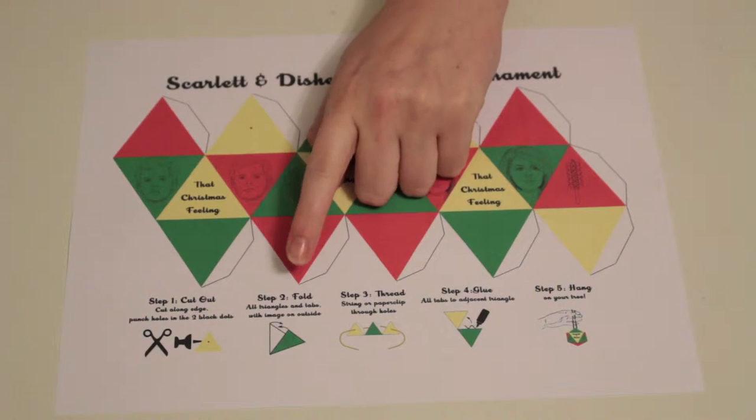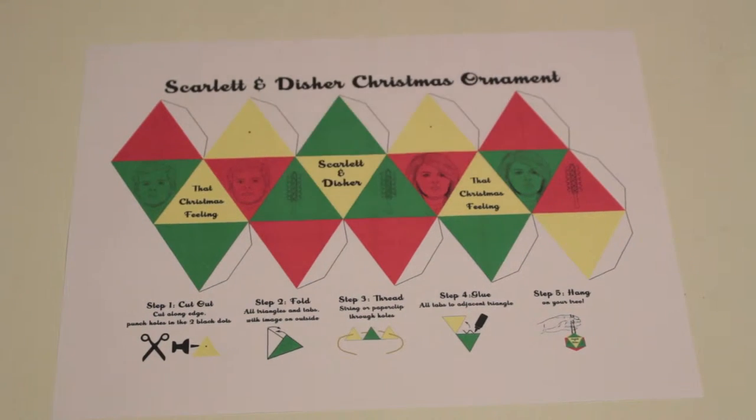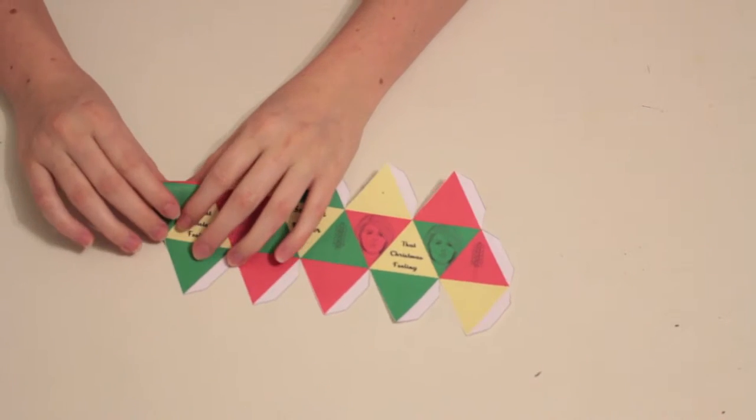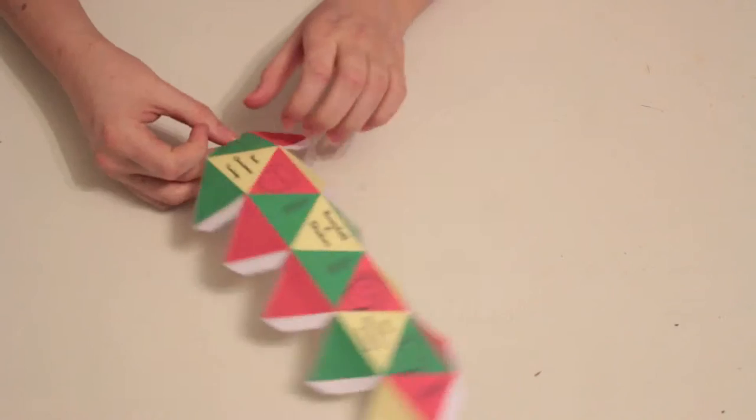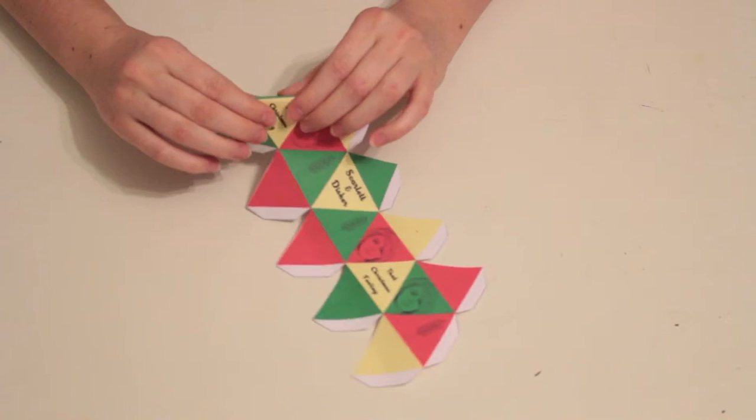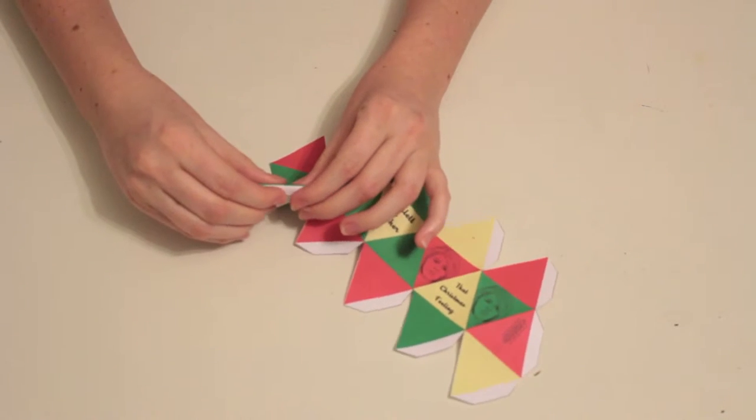Step 2: Fold. Fold each of the triangular segments using mountain folds. The image must remain on the outside. Once you've finished, fold each of the white tabs as well.